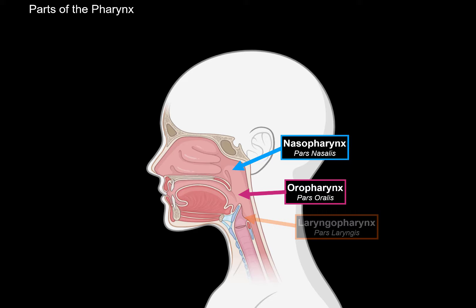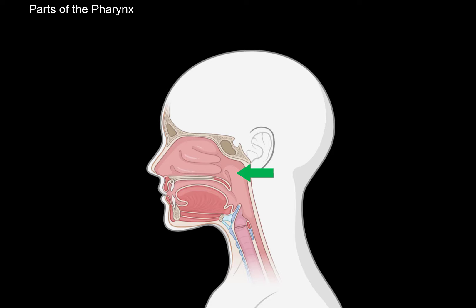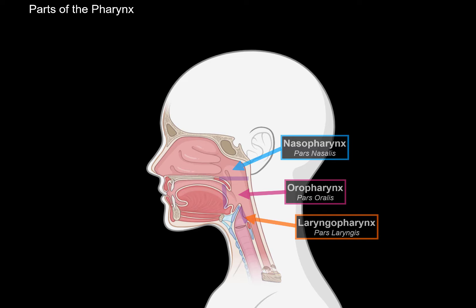We still have the nasopharynx, the oropharynx, and the laryngopharynx. In terms of the digestive pathway, the pharynx will continue downwards as the esophagus. You can think of the pharynx as a control point for breathing and swallowing, so the esophagus is usually closed off when you're breathing. But when you swallow, the soft palate blocks the nasopharynx so the food doesn't end up in the nasal cavity. The larynx gets blocked by the epiglottis, and the tongue goes up to the palate to push the food down the esophagus.